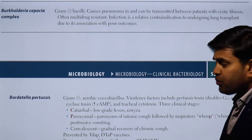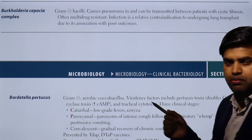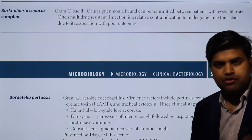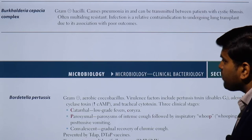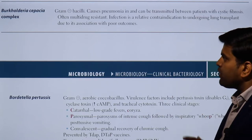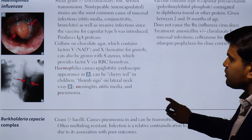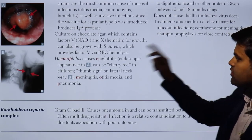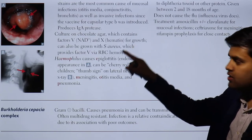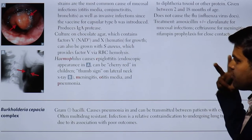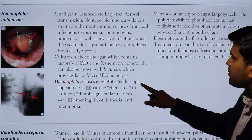Hello and good morning everyone. Today we are on page 142 of USMLE Step 1 2021. I am Dr. Ranjit Shah. We are revising our USMLE section of microbiology, and we have initially talked about Haemophilus influenzae in the previous lecture, where we discussed the thumb sign and the endoscopic picture showing a cherry red appearance, and in lateral neck X-ray you can find the thumb sign. This is responsible for many types of disease.